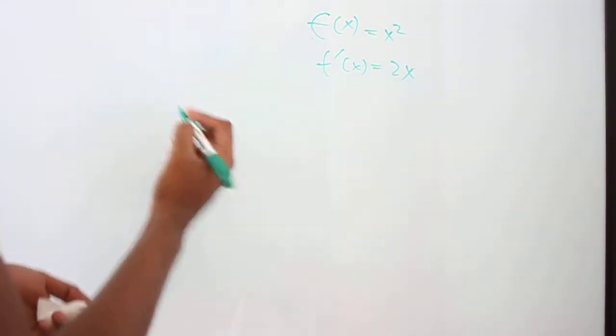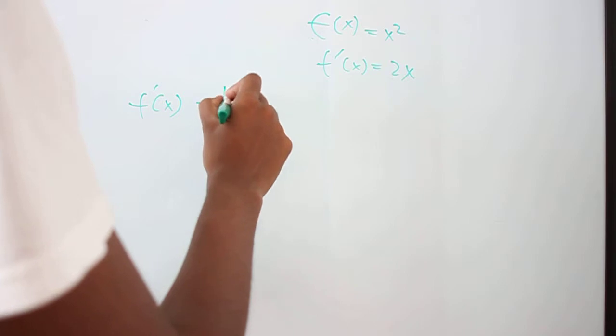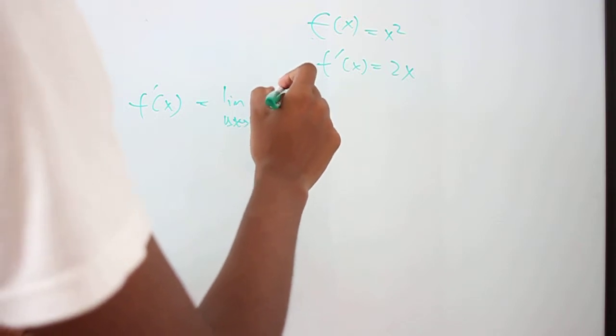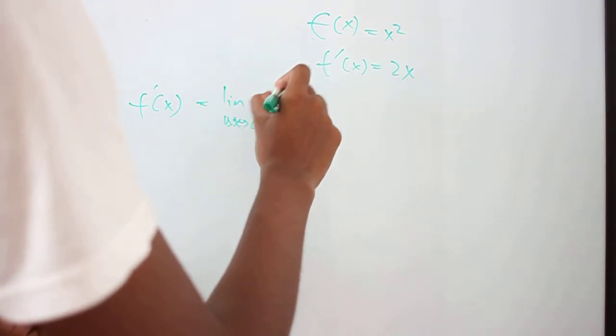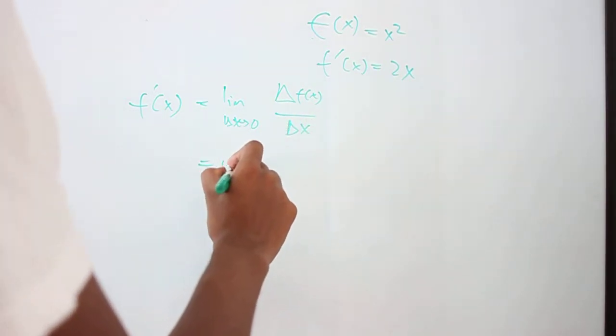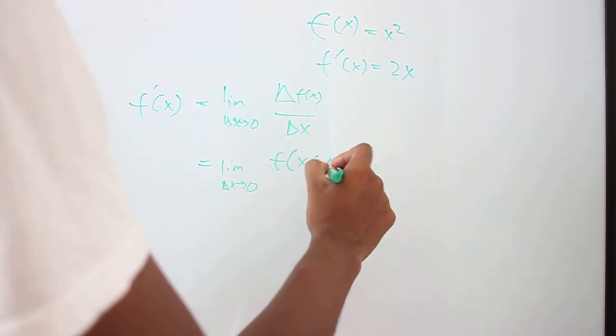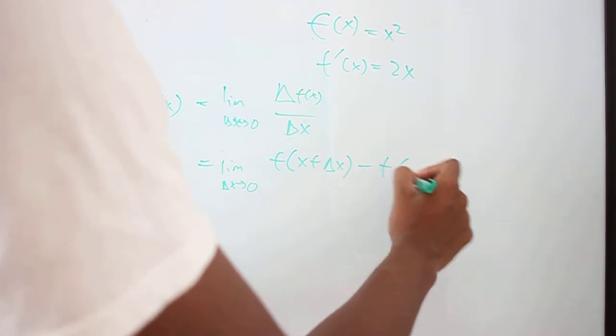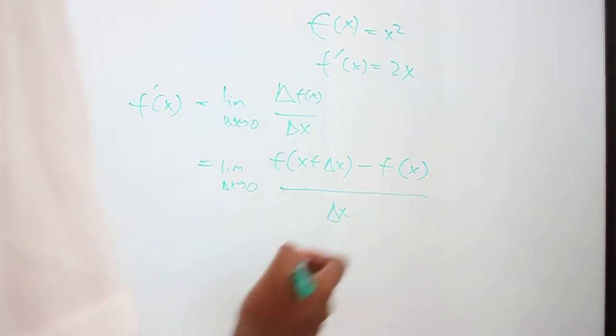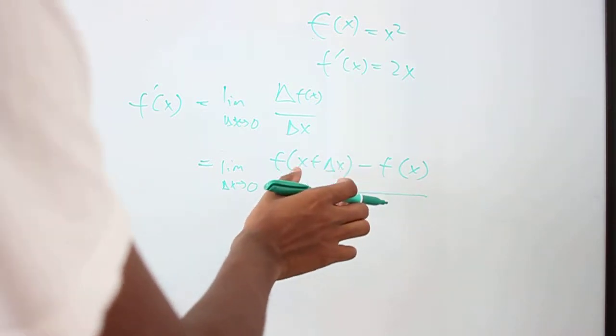But we can derive that from really simple principles. So let's say f'(x) is some change in f(x) over some change in x. And what this actually means is that you take some really small change in x, and then you minus the initial value of x over delta x. And what the function f actually does is it takes any x that you give it and it squares it.